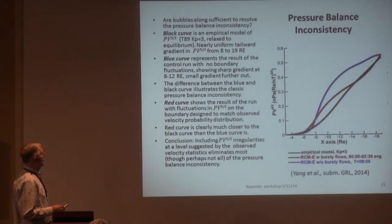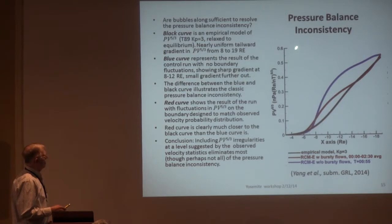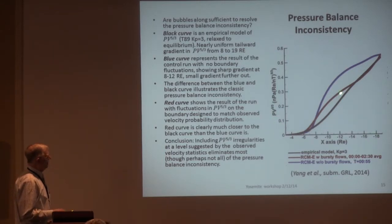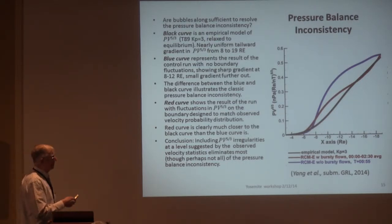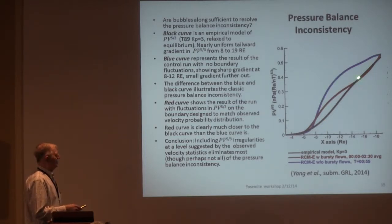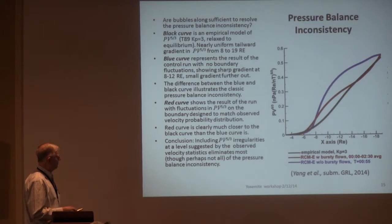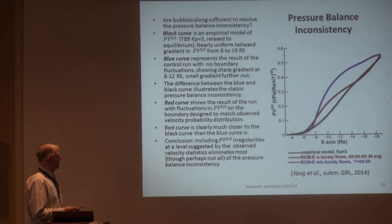The question is: does that resolve the pressure balance inconsistency? What I've plotted here is PV^gamma versus X — three different curves. The black curve is an empirical curve consistent with the boundary conditions used here. The blue curve is just running the RCM without the BBFs. The red curve is running it with the BBFs. We haven't got perfect agreement and there's still a discrepancy, but nevertheless the BBFs get rid of a large part — probably most — of the pressure balance inconsistency on this first try.